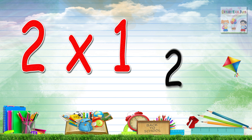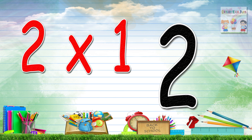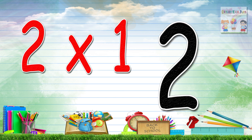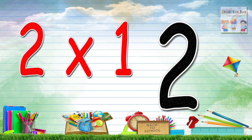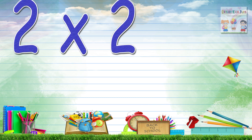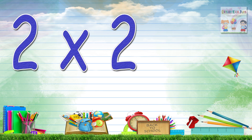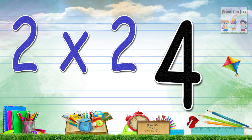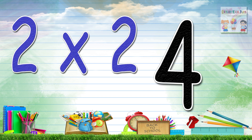Two Multiplication — Dewarak Chakure. Two by one, two — Dewarak eke, dekay. Two by two, four — Dewarak eke, dekay.